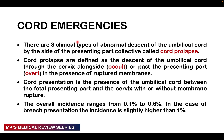These cord emergencies are predominantly three clinical types of abnormal descent of the umbilical cord, right side by the presenting part, and they are collectively called cord prolapse. Cord prolapse simply means there is a descent of the umbilical cord through the cervix, either along the presenting part or past the presenting part in the presence of ruptured membranes. If it is along the presenting part, we call it the occult; if it is in front of the presenting part, we call it the overt variant.